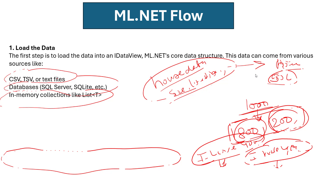To build a machine learning program in ML.NET, you need to add the Microsoft.ML NuGet package to your project. After that you can load data in many formats: CSV, TSV, text files, databases like SQL Server and SQLite, and in-memory collections.